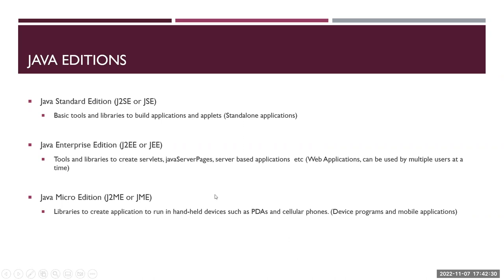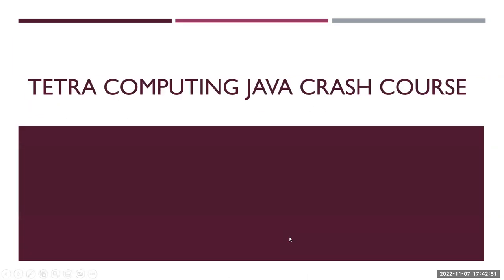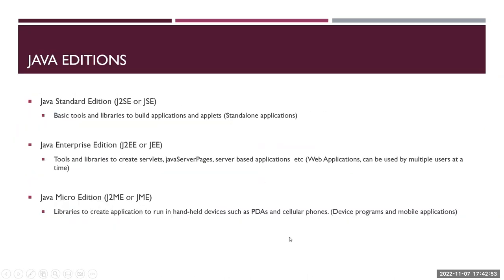For example, a simple GPS — if you want to know your location or set an alarm — you require some application to process your input and provide an output. All these applications are very minimal and small in size. For those kinds of applications, use the Java Micro Edition.